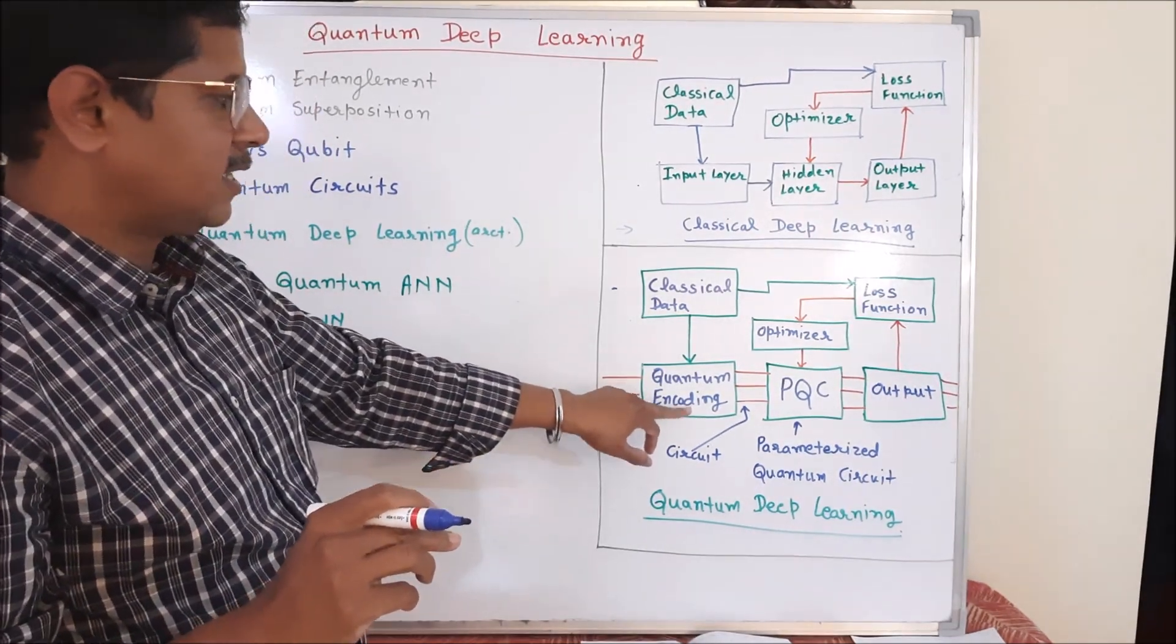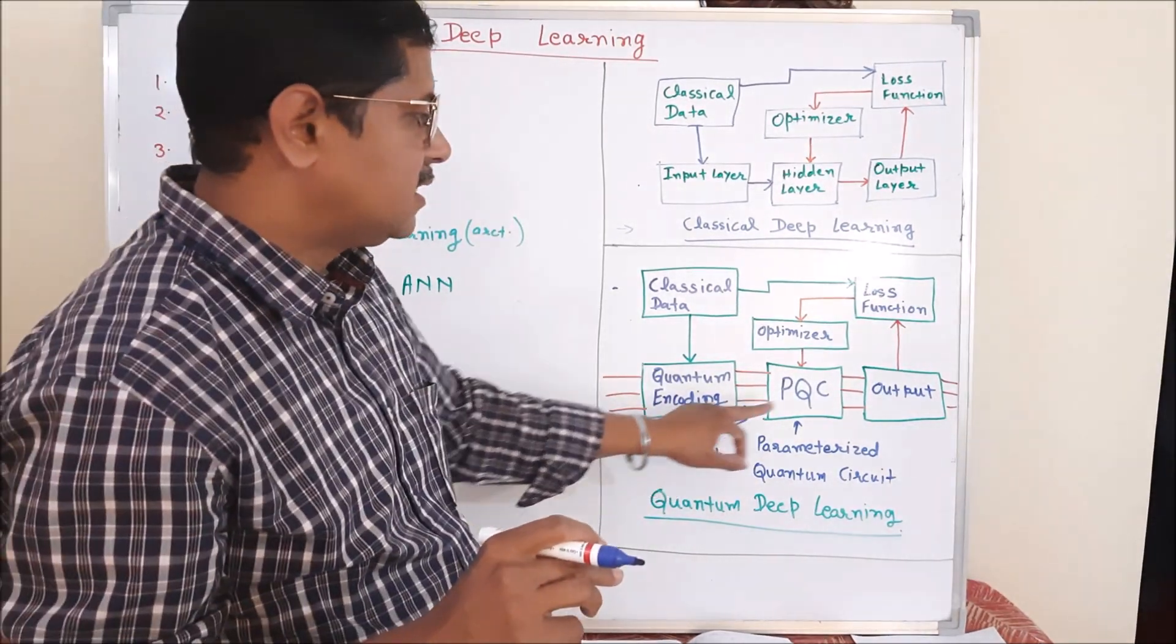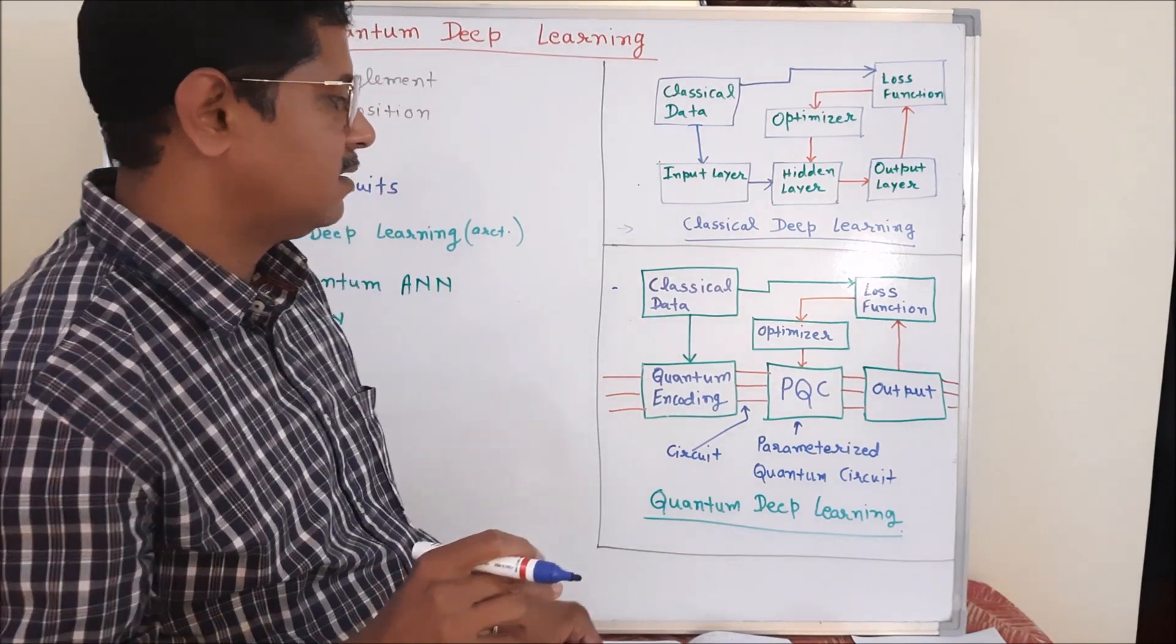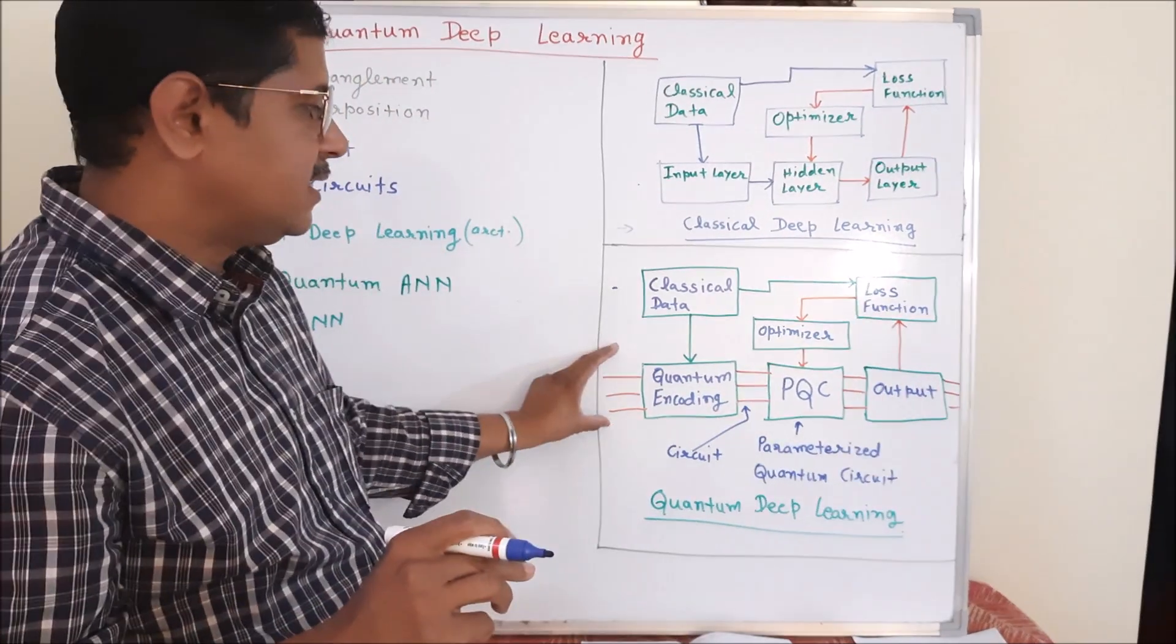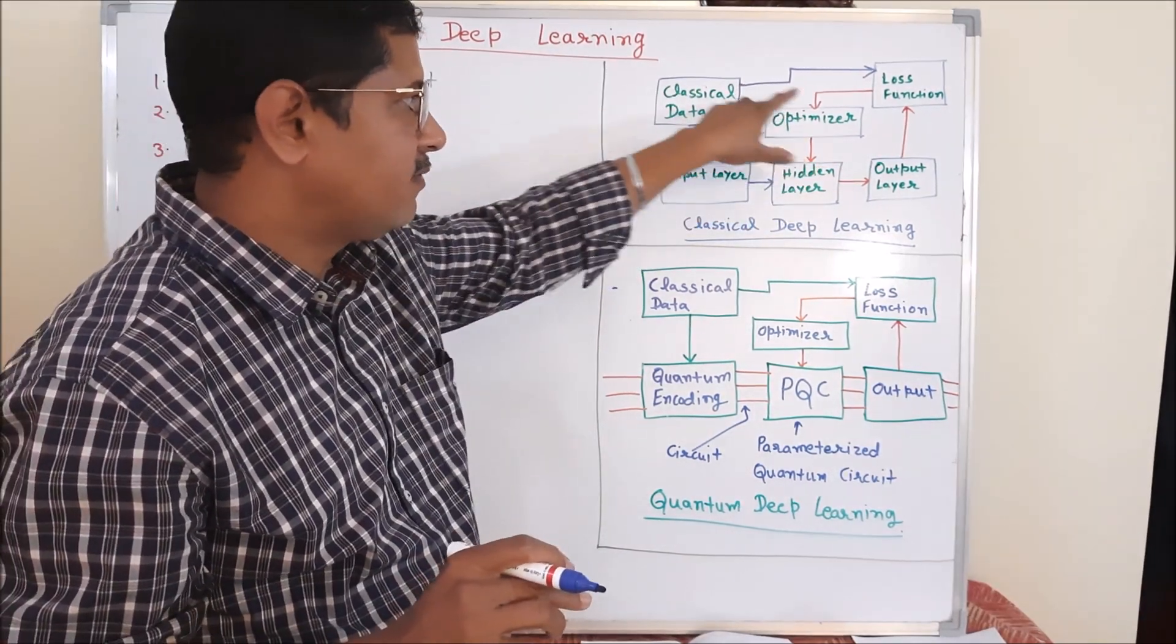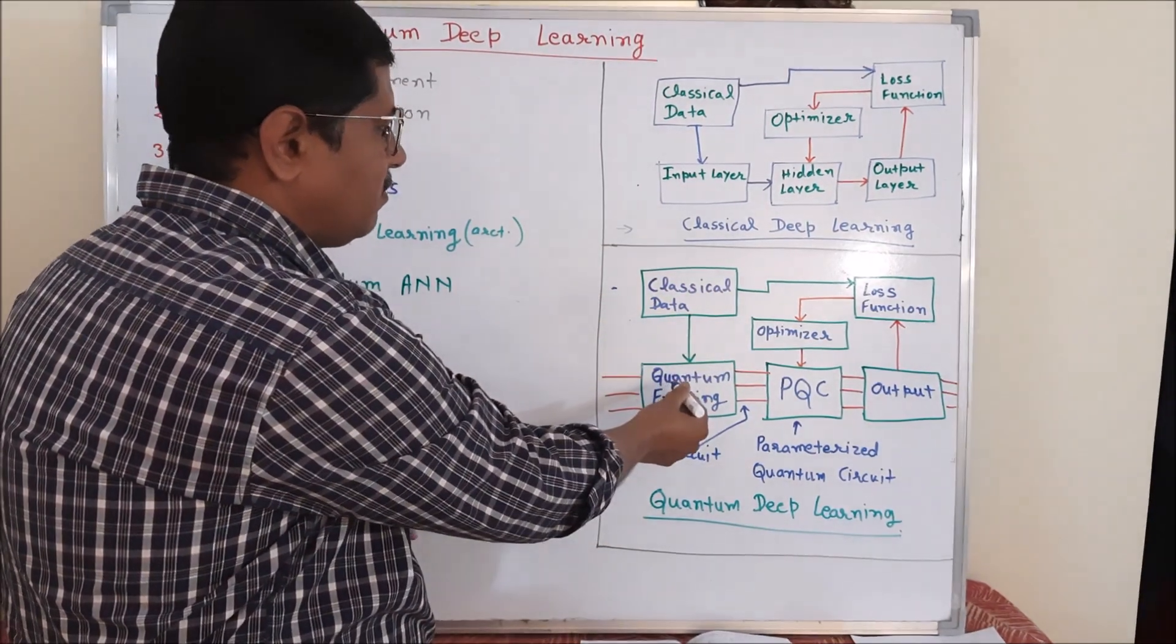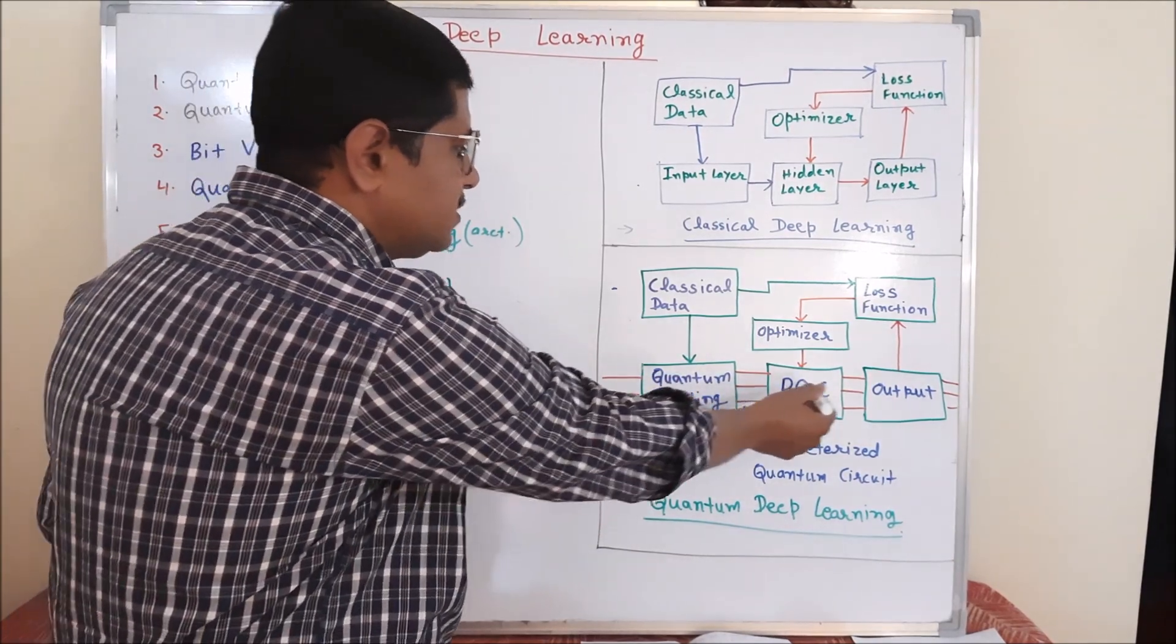Quantum encoding means we convert the classical data into the quantum understandable format that is known as qubit. Once we transfer the data into the qubit format, we pass it through parametrized quantum circuit. Now, one important thing is, here we had a loop or network that we pass the entire data. But here, once we get the data from classical data sources, we pass it through some circuit.